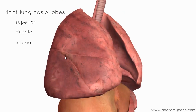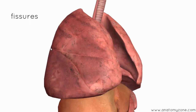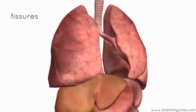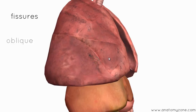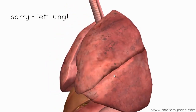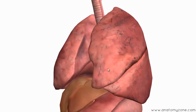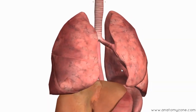These lobes are separated by fissures. On the right lung, you've got a horizontal fissure which separates the superior and middle lobes, and an oblique fissure which separates the middle from the inferior lobe and the superior and inferior lobe at the back. The left lung only has one fissure — an oblique fissure — which separates the superior and inferior lobe. So there are three right lobar bronchi and two left lobar bronchi, because there are three lobes on the right and two lobes on the left.